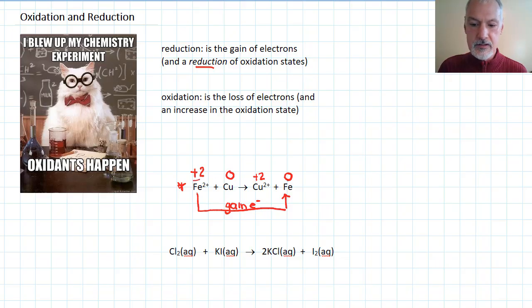Going from plus 2 to zero, we can see that that has been reduced in charge, or reduced in oxidation state. So, this is our reduced species. Copper, on the other hand, to go from zero to plus 2, it must have lost electrons.